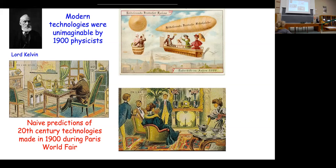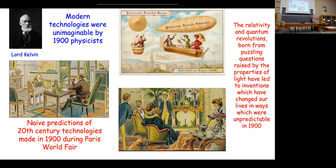People believed one could heat oneself with radium. Radium had just been discovered by Pierre and Marie Curie. This is a very naive and strange use of nuclear power and nuclear energy, but it was absolutely impossible at that time to predict the technologies of the 20th century, because all these technologies relied on the revolutions of relativity and quantum physics.